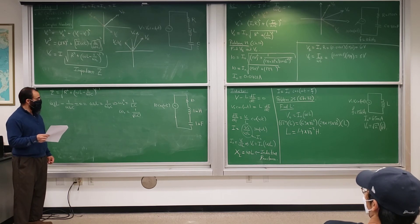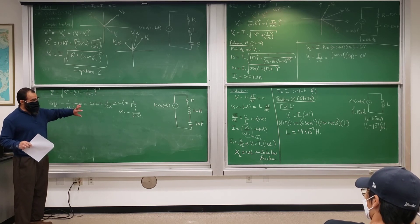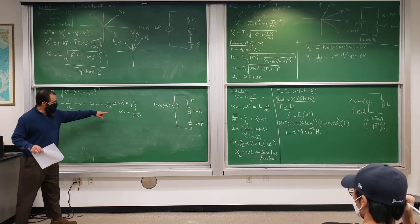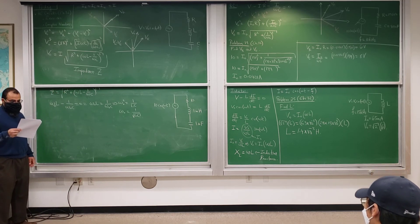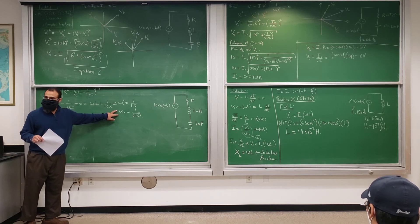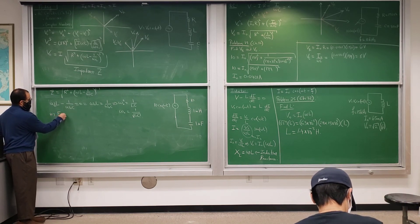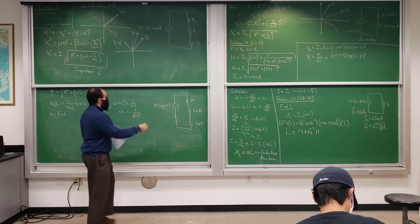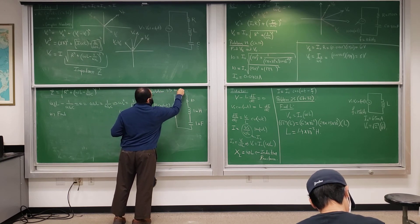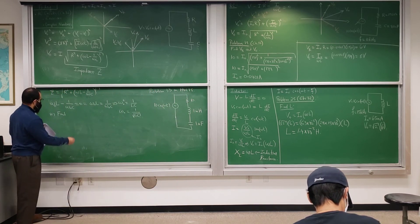This resonance frequency was mentioned earlier when we had a capacitor and inductor oscillating by themselves. Now in problem 33, part A asks us to find the resonance frequency. Omega0 equals 1 over the square root of LC, with L equal to 1 millihenry (10 to the minus 3) and C equal to 1 microfarad (10 to the minus 6).